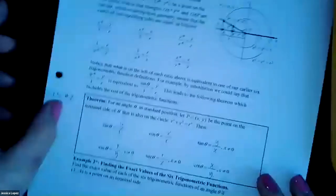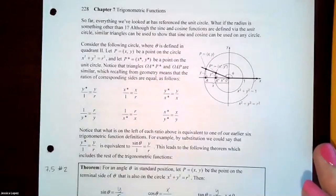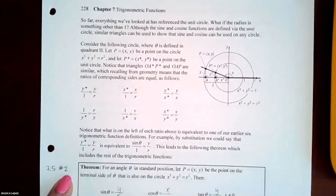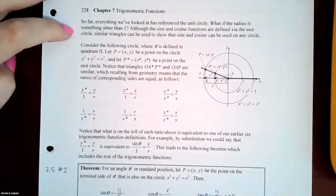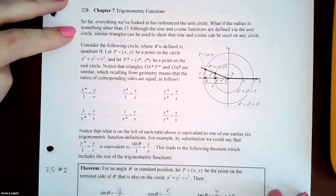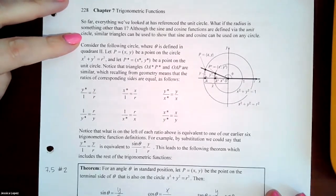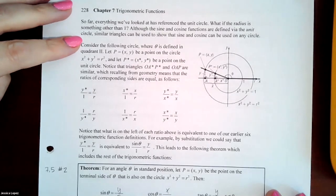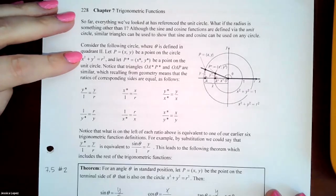This example will help you with problem 4 in the homework assignment. The homework is general, assuming you've heard the entire lesson. So far everything we've looked at has referenced the unit circle. What if the radius is something other than 1? Although sine and cosine are defined via the unit circle, similar triangles can be used to show they can be applied on any circle. Consider a circle where theta is defined in quadrant 2.